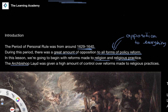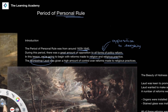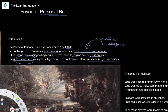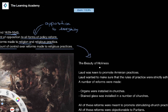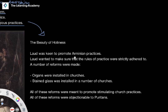We begin by talking about Archbishop Laud, who was given effectively a very high amount of control over the reforms made to religious practices. As you can imagine, if Parliament wasn't very happy with this Archbishop, then we can understand that they're not going to be very happy with the practices that he implemented.